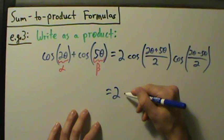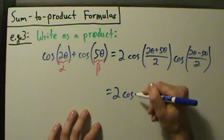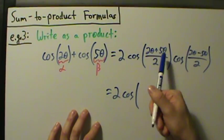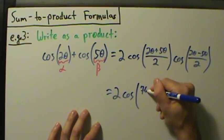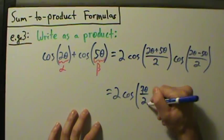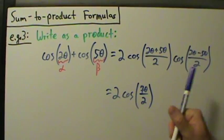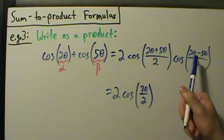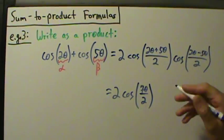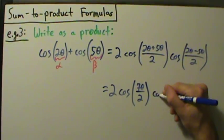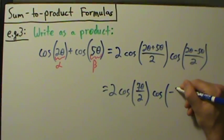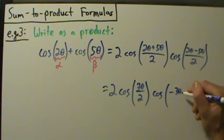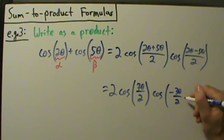This becomes two times the cosine of two theta plus five theta, which is seven theta, so we have seven theta over two. Then here we have cosine of two theta minus five theta, which is negative three theta, so that's cosine of negative three theta over two.